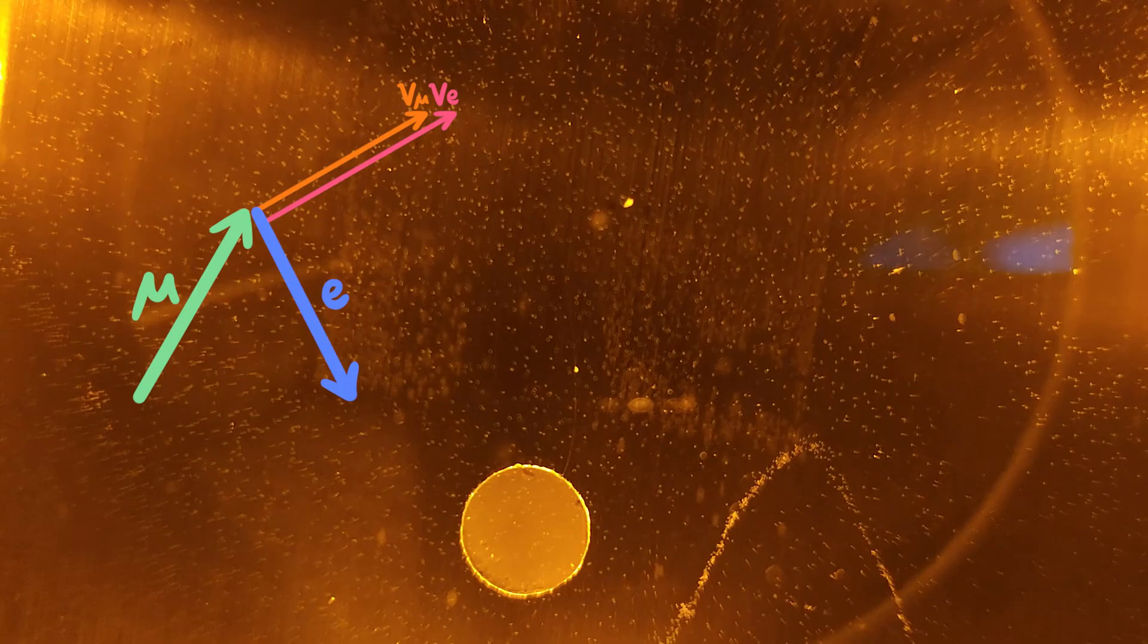Kinks such as this one here could represent a muon decaying into an electron and two neutrinos. Since particles must be charged to produce these tracks, the negatively charged electron and muon do, and the uncharged neutrinos do not.